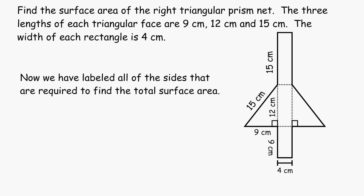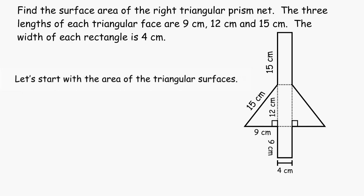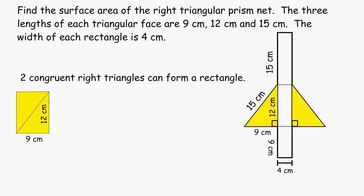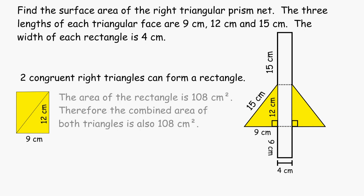We are going to begin by finding the combined area of the two triangular surfaces. What I'm going to do is take the two triangles and form a single rectangle and find the area of the rectangle formed by combining the two. The two triangles together would form a rectangle with the dimensions 9 by 12.